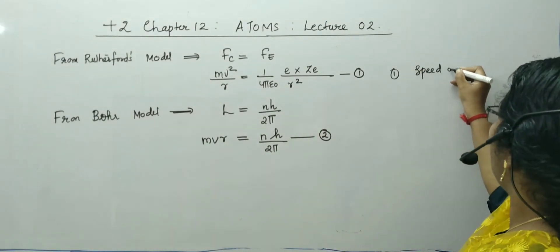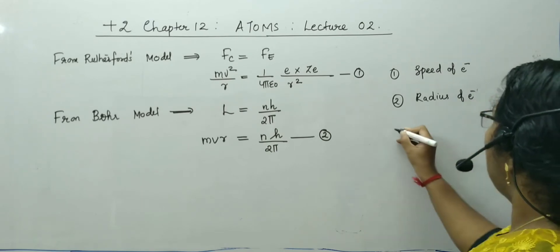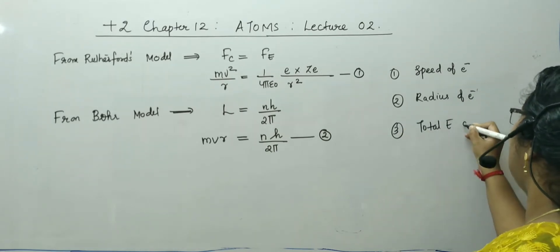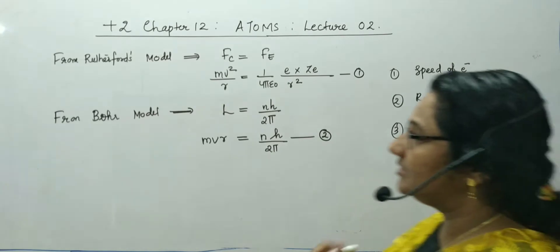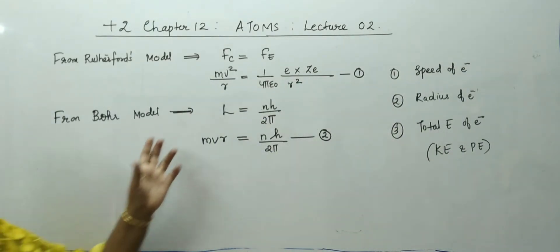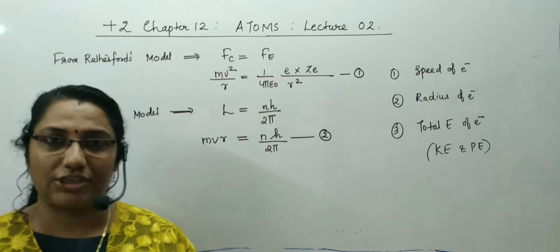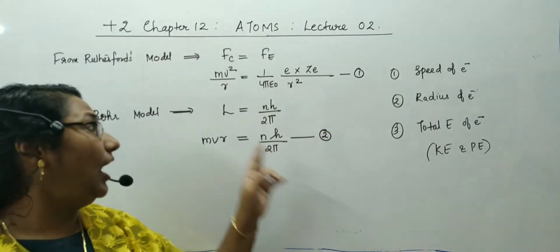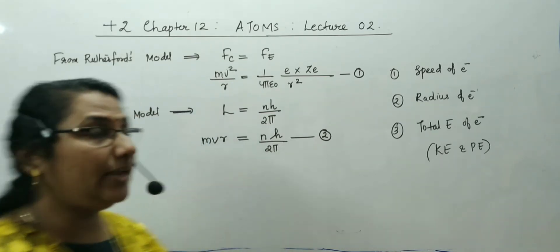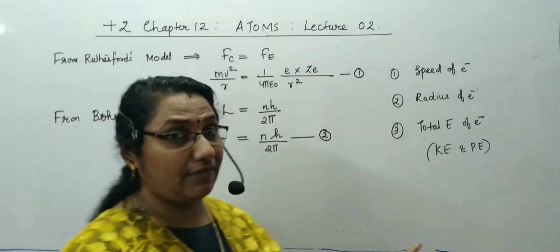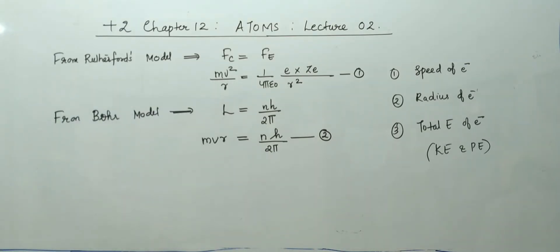The speed of the orbiting electron, the radius of the orbit, and the total energy of the electron including kinetic and potential energy. By considering these two important statements — the necessary centripetal force provided by the electrostatic force, and the angular momentum equal to nh/2π — Bohr was able to find the speed, radius, and total energy of the electron. We are going to take the equations one by one.